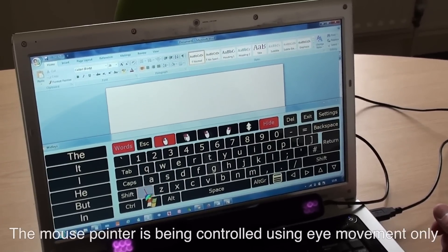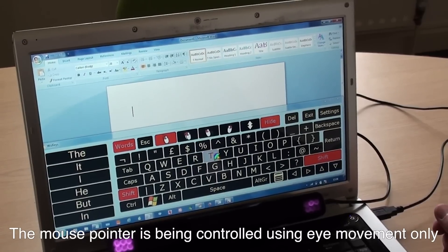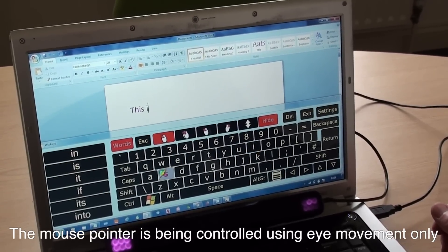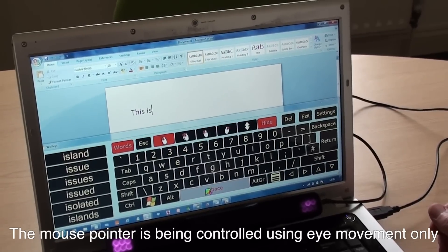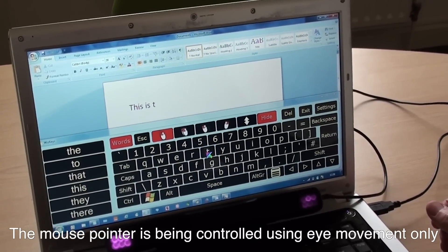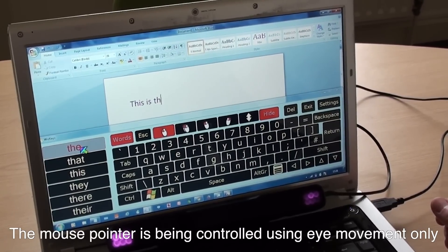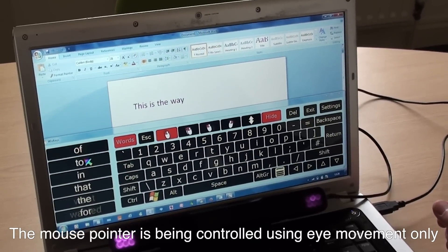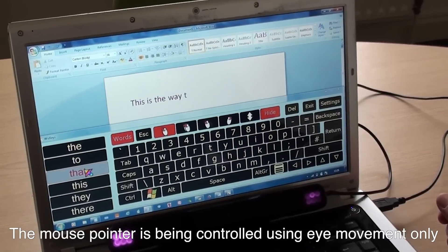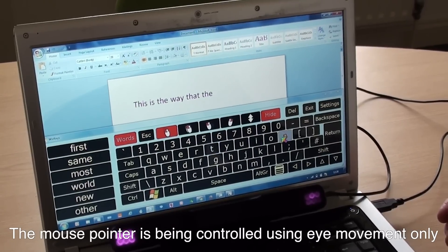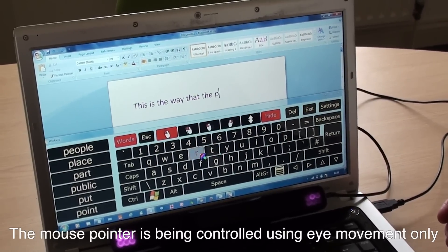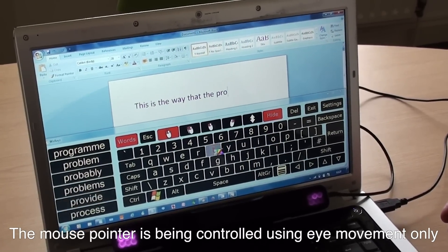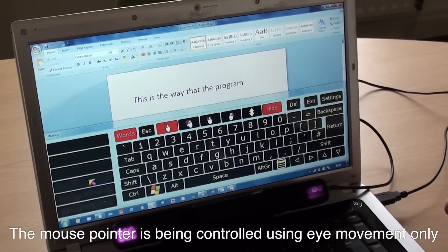So I'm going to say this, so I'll just shift T, okay, H, so this is I S space the way. So W, A, go to prediction there, the way that the program, P, R, O, and G, there we are, works.